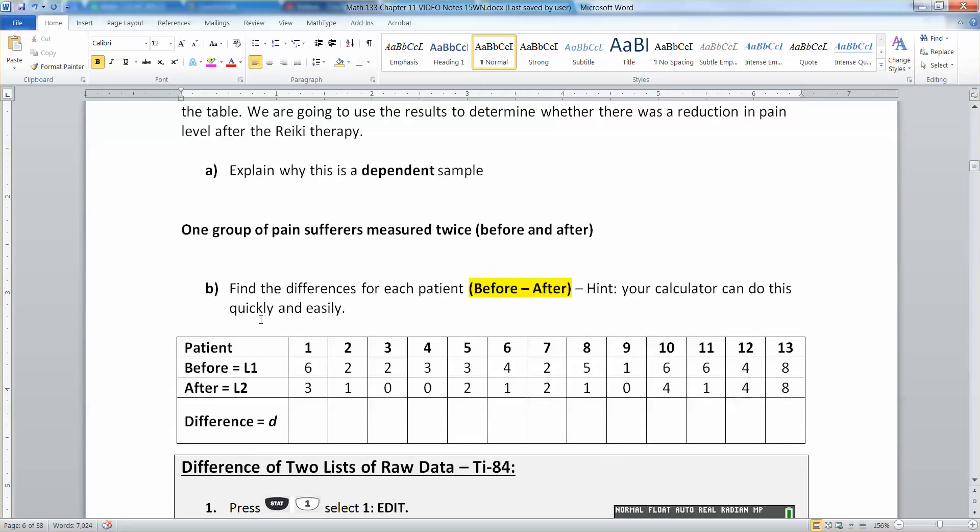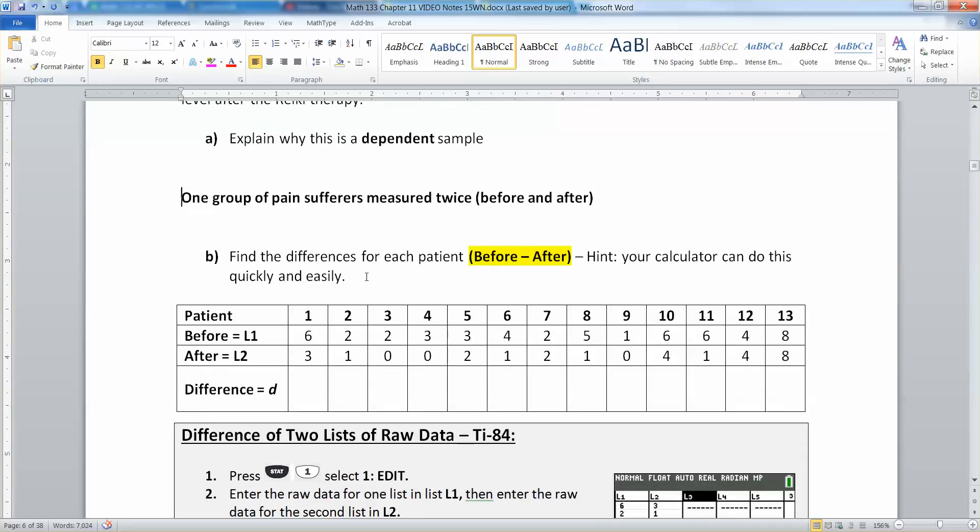All right, now that we know it's a dependent sample, then they're asking us to find the differences for each patient before minus after. All right, so we're going to do this in the way that they tell us to. Otherwise, you actually are open to use either direction. You could do before minus after or after minus before, but we're going to do before minus after as it's requested right here.